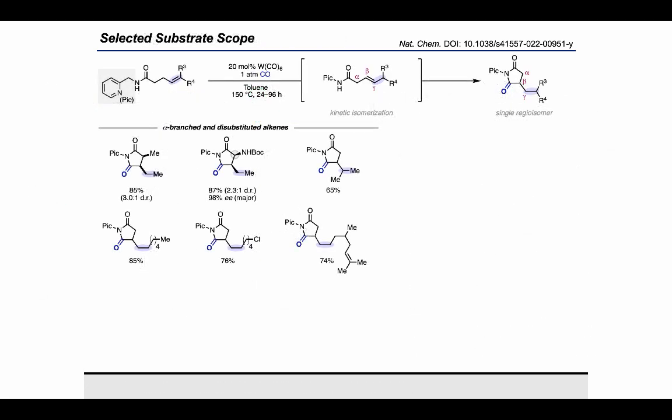It was found that alpha-branched substrates containing a terminal delta-epsilon alkene gave the product in very high yield and moderate DR. Importantly, when starting from the enantiopure N-Boc alloglycine, the product for the major diastereomer had complete enantiomeric retention. Other substrates, including a 1,1-disubstituted alkene and those possessing an alkyl chloride or even multiple alkenes were well tolerated.